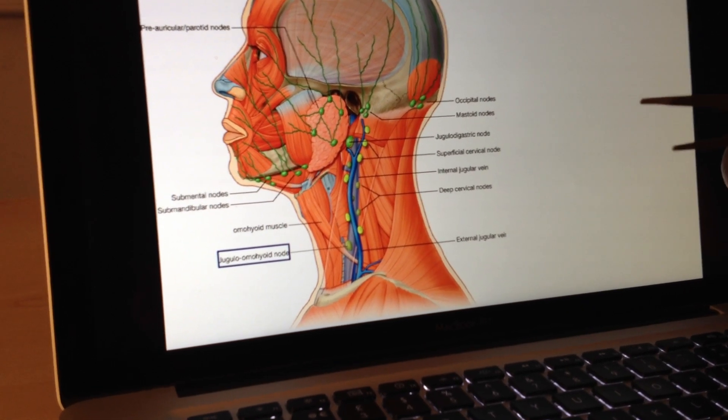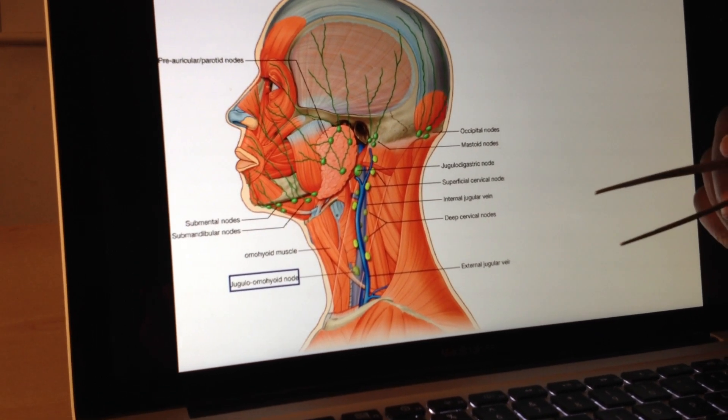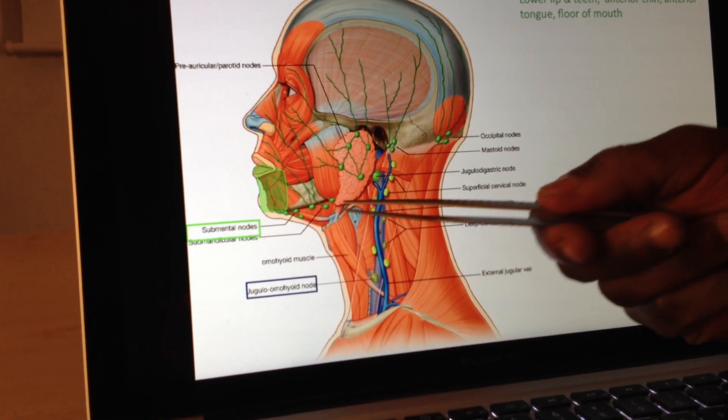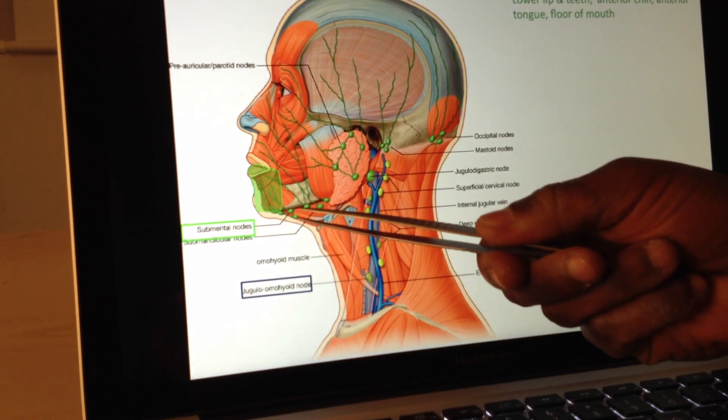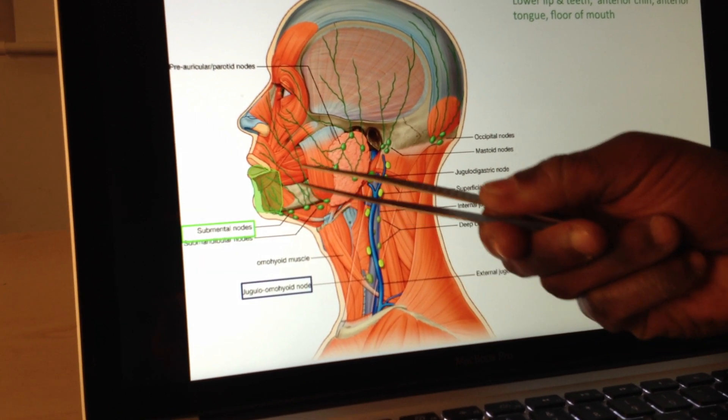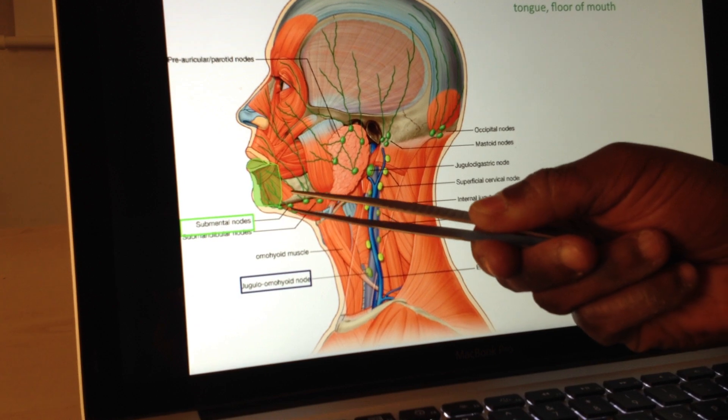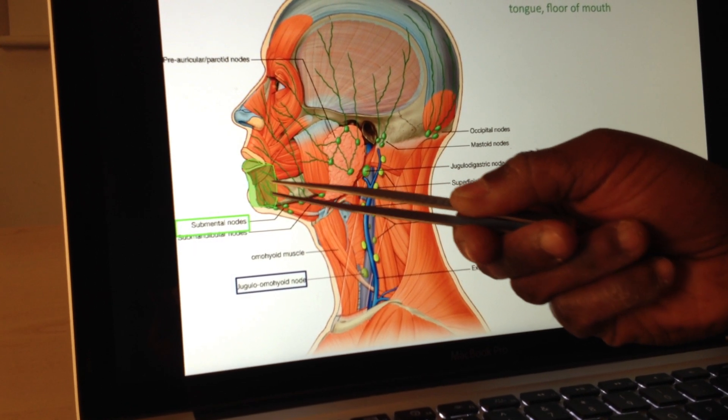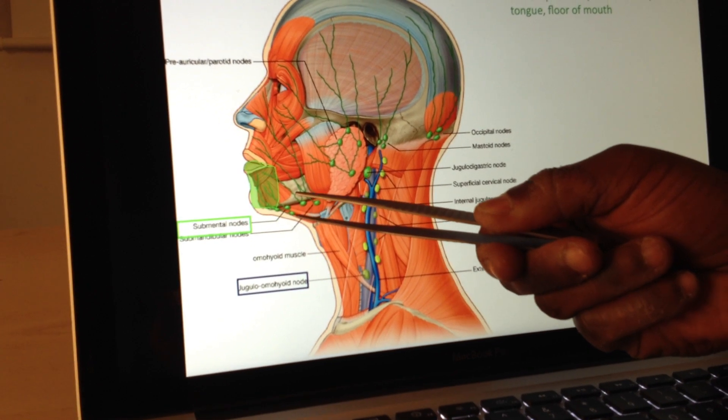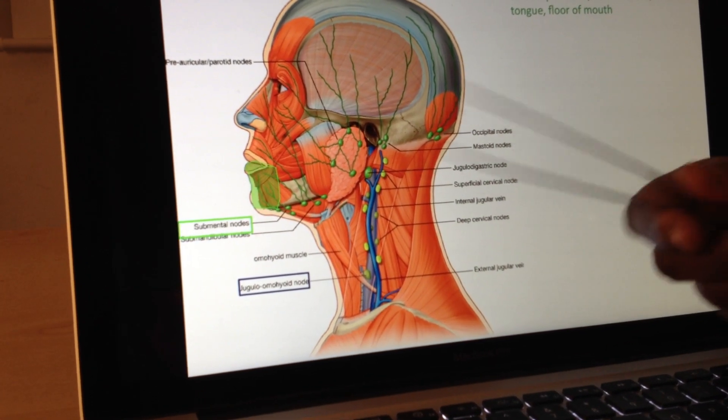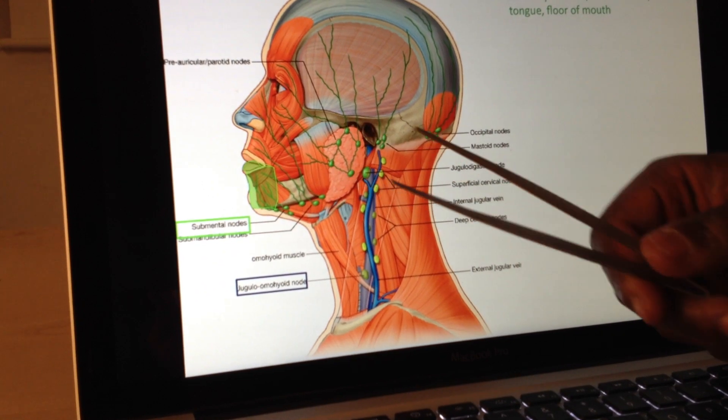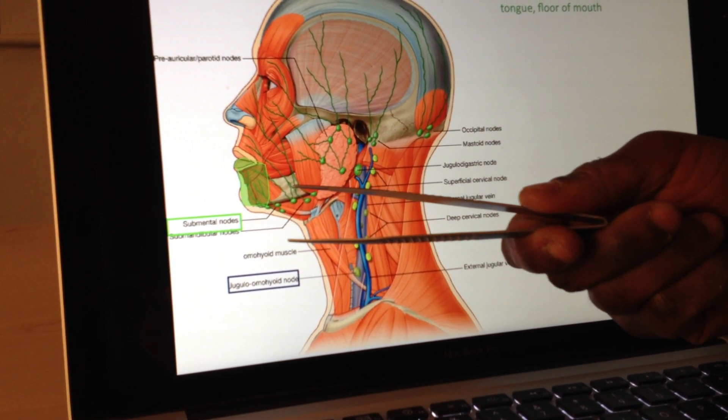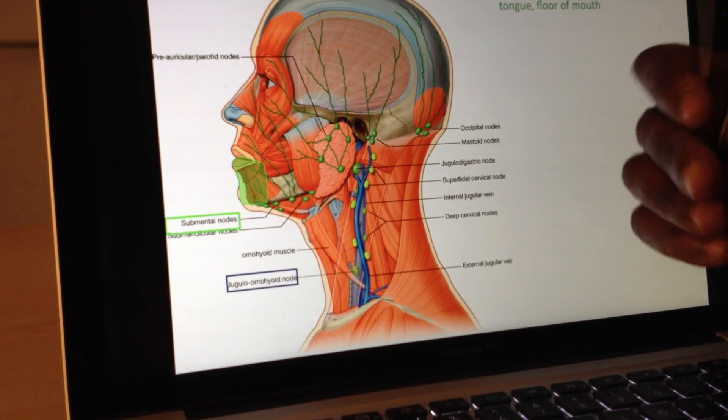Okay, so let's dress this up a little bit and talk about what areas these nodes are draining. So if you go to the first one, I have here my submental nodes, and they are draining this area here around my chin. So this is the mental area, submental, underneath the mental area. The areas that's draining is going to be the lower teeth, the anterior chin, the anterior of the tongue, and the floor of the mouth in that anterior section there.